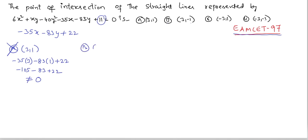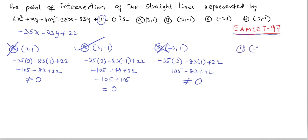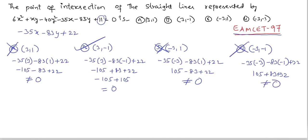Checking second option (3, -1): -35×3 - 83×(-1) + 22 = -105 + 83 + 22 = 0. Second option is correct. Third option (-3, 1) gives -105 + 83 + 22 ≠ 0, and fourth option (-3, -1) gives 105 + 83 + 22 ≠ 0. Both are wrong. The point of intersection is (3, -1), so the second option is the correct answer.